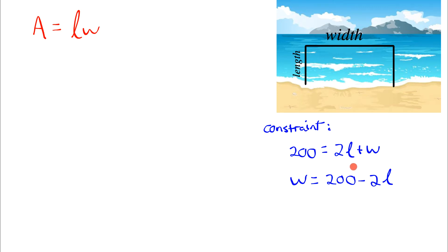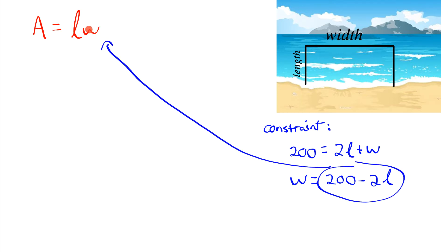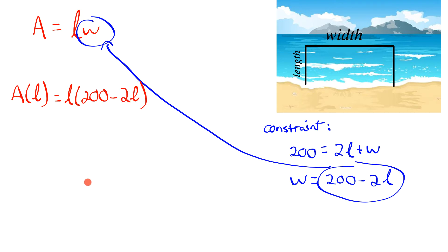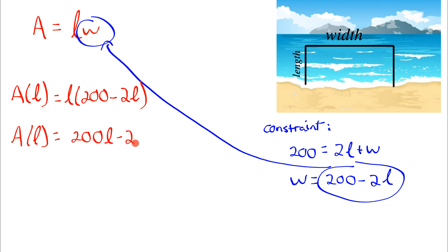We replace the width in our area function with 200 minus 2l, giving an area function written only in terms of length: A = l times (200 minus 2l). This gives us the area of a rectangle where the three rope sides add up to 200. Expanding: A = 200l minus 2l squared, or rearranged in proper order: A = negative 2l squared plus 200l.